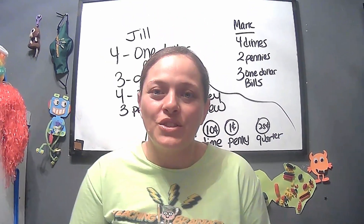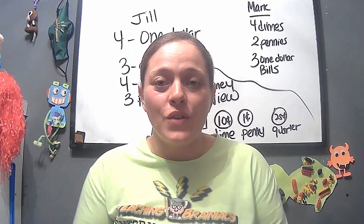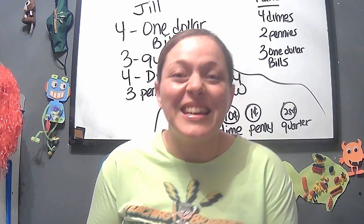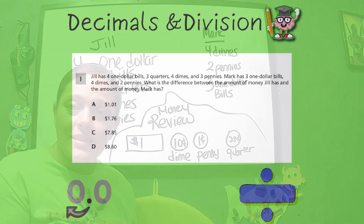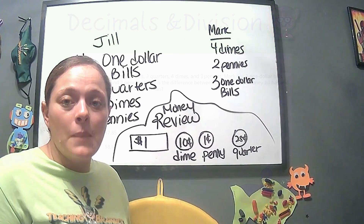Welcome back — you made it to part two, thank you for coming. Here we're going to talk about decimals and division. Jill has four one-dollar bills, three quarters, four dimes, and three pennies. Mark has three one-dollar bills, four dimes, and two pennies. What is the difference between the amount of money Jill has and the amount of money Mark has?